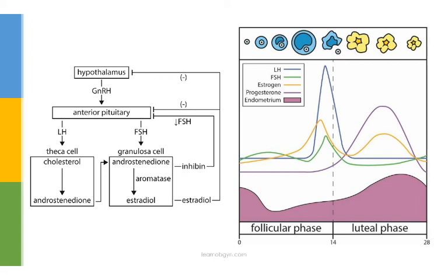Now let's look at estrogen, represented by yellow on the chart. The granulosa cells are producing estrogen, but with some negative feedback, you get only a slow rise. Eventually estrogen hits a critical level, at which point it switches from negative feedback to positive feedback, and you get a surge of estrogen. This positive feedback also drives a huge and rapid increase in LH, known as the LH surge. About 24 to 36 hours after the initial LH surge, or 12 hours from the LH peak, ovulation occurs — the dominant follicle releases the oocyte, and what remains becomes the corpus luteum.